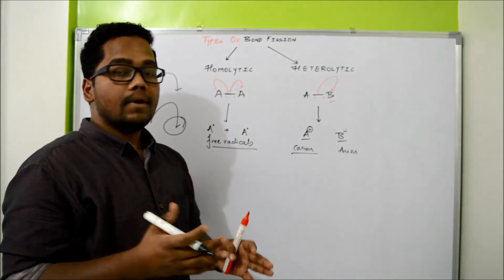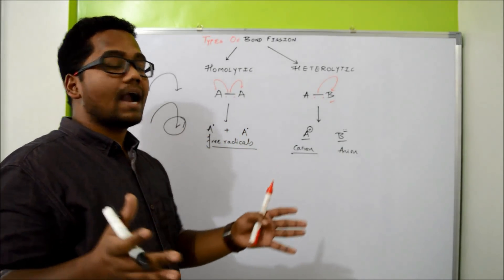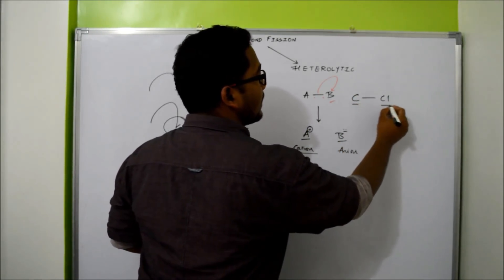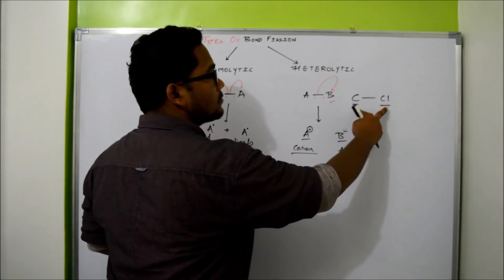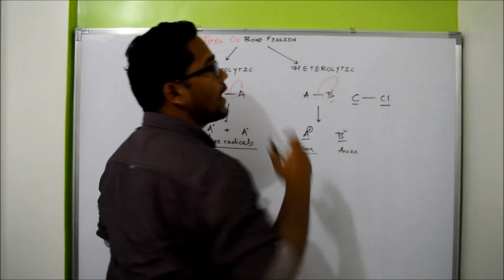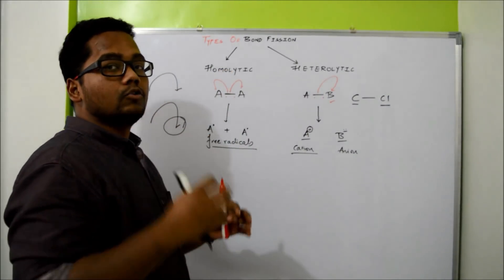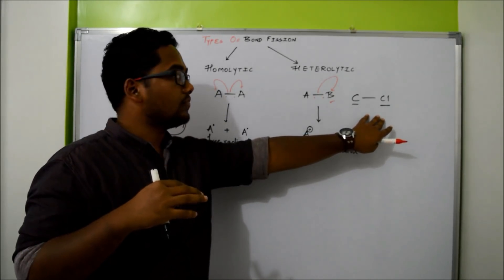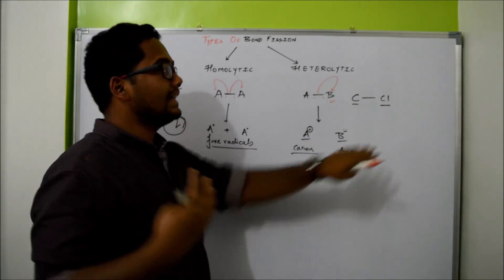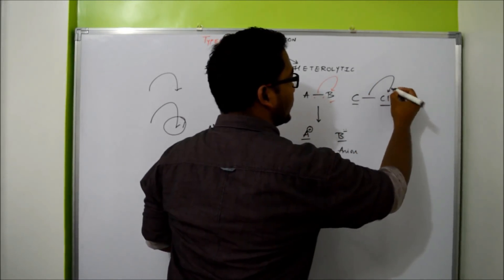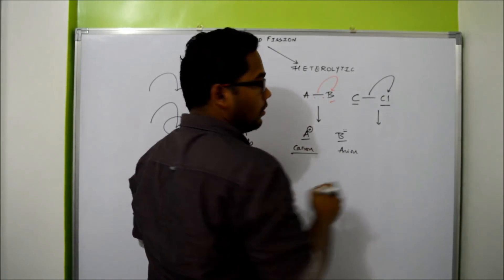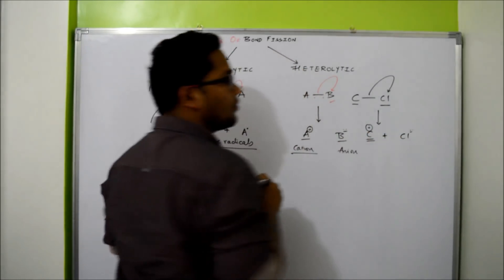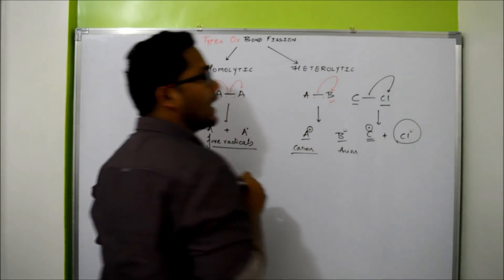If you want to comment on a bond between heteroatomic atoms, for example a bond between carbon and chlorine — this is a bond between atoms of different elements — this will preferably go by heterolytic bond fission. Based on electronegativity difference, if you have a carbon-chlorine bond, in many cases the bond fission will be heterolytic. This bond breaking gives a negative charge on the chlorine atom and carbon acquires a positive charge, forming a carbocation and chloride ion.